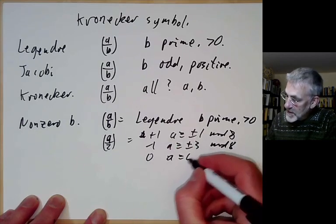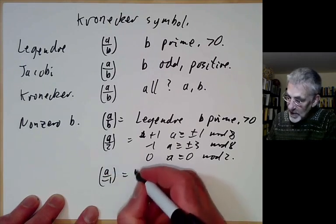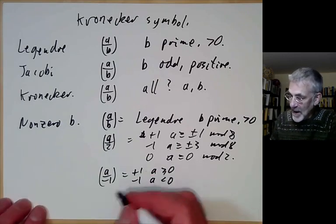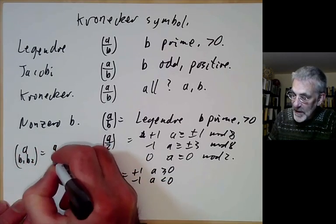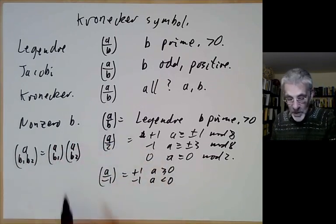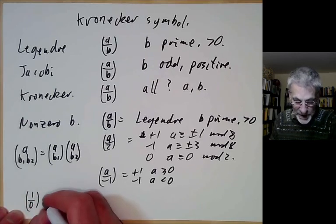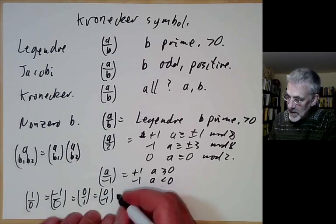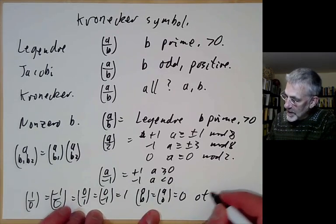We define (a/2) as 0 for a ≡ 0 mod 2, and (a/−1) as +1 if a ≥ 0 and −1 if a < 0. In general, (a/b₁b₂) = (a/b₁) × (a/b₂), which defines it for all non-zero b. If b is 0, we just define (1/0) = 1, (−1/0) = 1, and (0/b) = 0 otherwise, though this does cause problems as we'll see later.